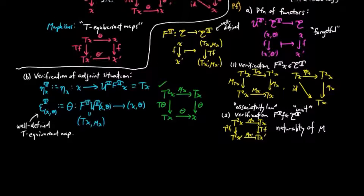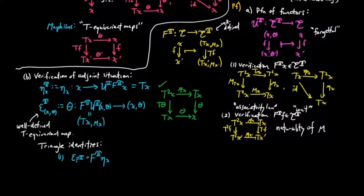We need to show that the unit and counit satisfy the triangle identities. First, epsilon_{F^t x} composed with F^t(eta_x) equals mu_x composed with t(eta_x). This is because F^t(x) has action mu_x, and epsilon takes the algebra to its action, so epsilon_{F^t x} = mu_x. Also, F^t(eta_x) = t(eta_x) by our definition of F^t. Therefore mu_x composed with t(eta_x) equals the identity on F^t(x) by the definition of a monad.